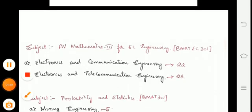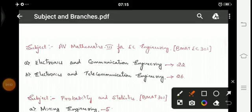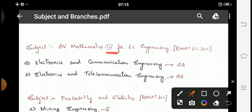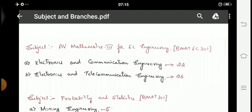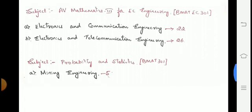For the electronics branches, Electronics and Communication Engineering IoT (serial 22) and Electronics and Telecommunication Engineering (serial 26) — these two branches will study Mathematics 3 for EC Engineering. The subject code is BMATEC 301. A few modules will have similarity with the CS mathematics BCS 301, but some modules will be different.